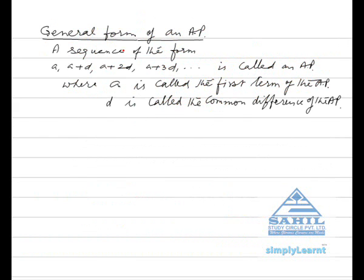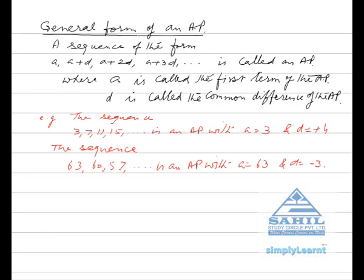The general form of an AP is a sequence of the form A, A+D, A+2D, A+3D, etc., where A is called the first term of the AP and D is called the common difference of the AP. For example, the sequence 3, 7, 11, 19, etc. is an AP with first term A = 3 and common difference D = +4.